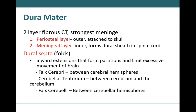These layers wrap around the brain in the same order as the spinal cord: dura mater outermost, arachnoid mater in the middle, and pia mater innermost. The dura mater around the brain is made up of two layers — the periosteal layer and the meningeal layer. Unlike the spinal cord, there's no epidural space here; the periosteal layer is attached directly to the skull. The dura mater also folds inward at certain places to form dural septa.